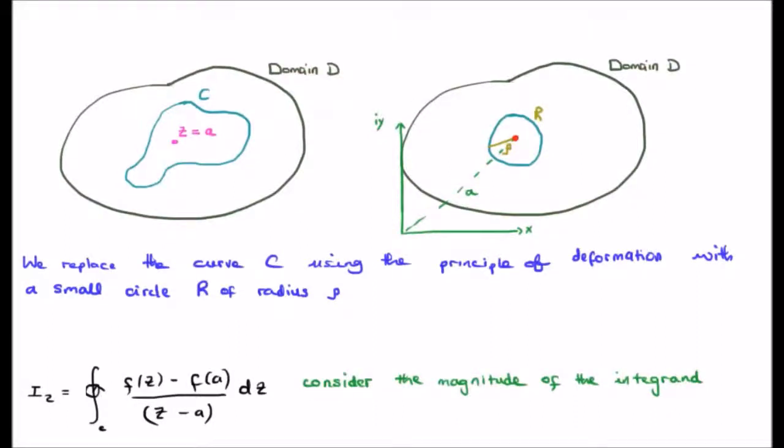It also means that the difference between z and a is also going to be bounded. For example we could shrink the radius of the circle here and z minus a would decrease. We could also increase it but the function is bounded so z minus a is always going to be less than a number which I call beta.